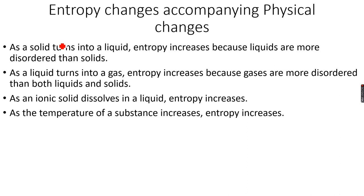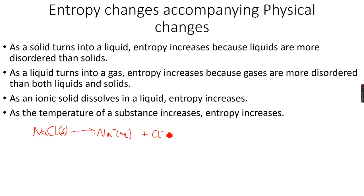This is an ionic solid NaCl — so this is one unit. But when I dissolve it in water, it dissociates into Na⁺ aqueous ions and Cl⁻ aqueous ions. So from one unit I am getting two units, and as I am getting two units the entropy is increasing, because these are more disordered. This is an ionic solid which is much more ordered, but these are ions which can spread around the entire liquid, so they are much more disordered. And as the final point: as the temperature of a substance increases, entropy increases because there is a gain in energy and so there is more disorder. So we have done entropy changes accompanying physical changes.